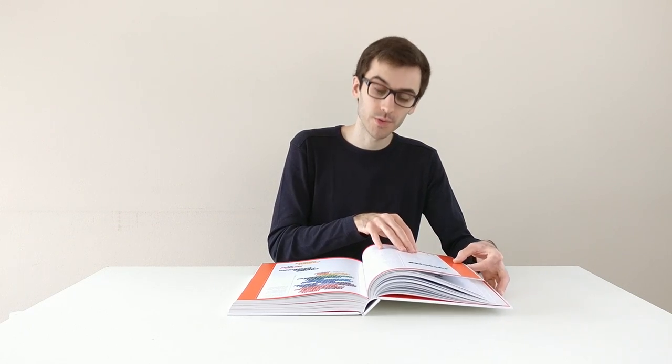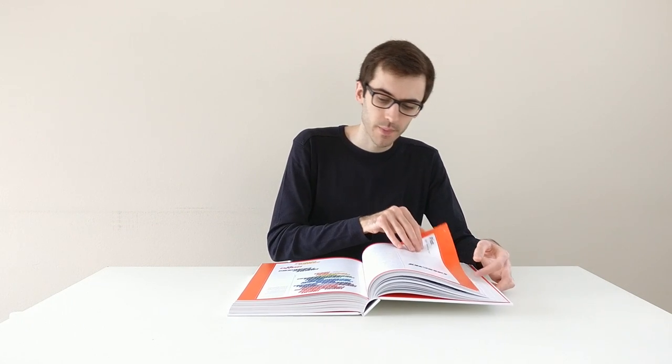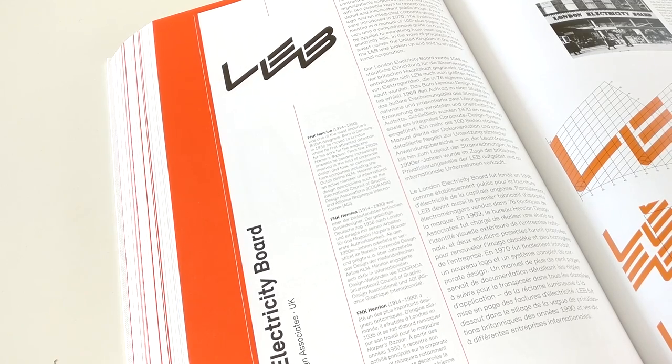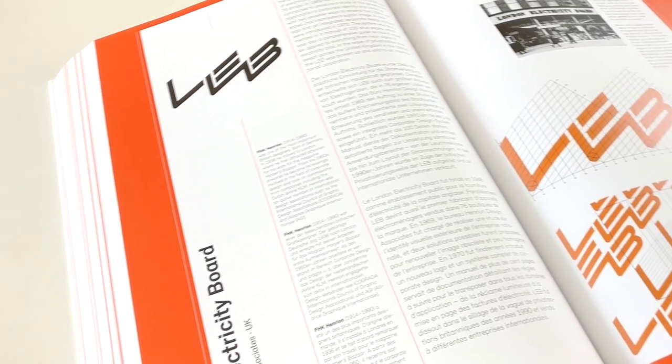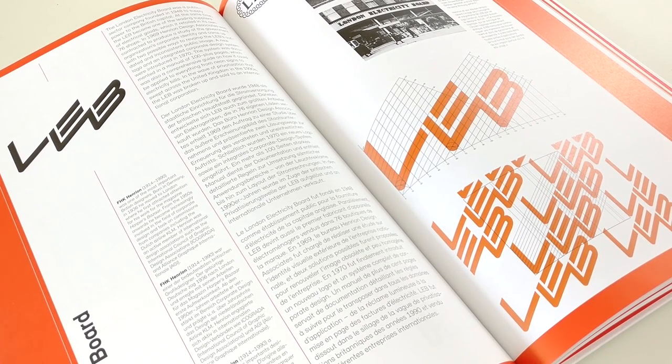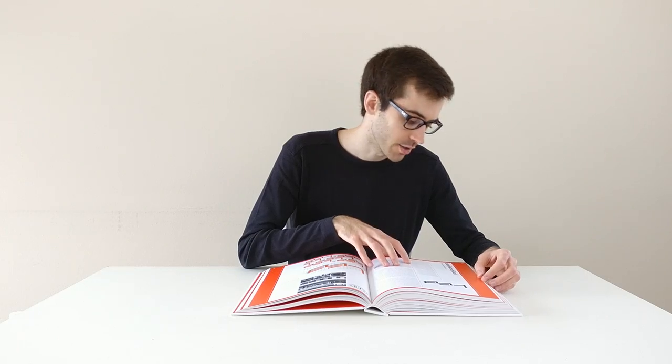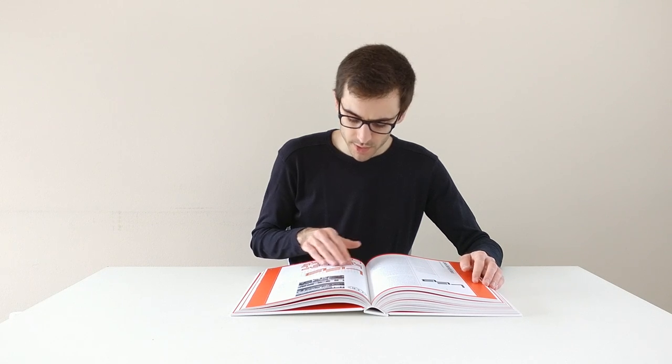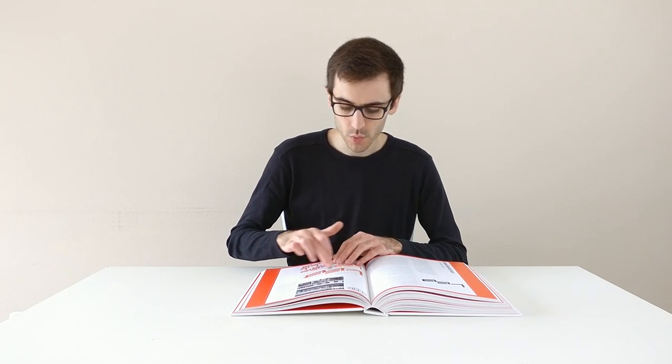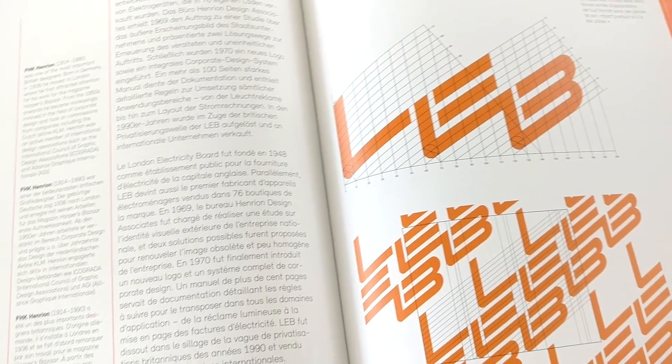Let's also take a look at the other kind of content in this book, and those are case studies. For example, this logo from London Electricity Board designed by Henrion Design Associates. What is very interesting about this logo is that you see how the logo was designed on the grid that was used.